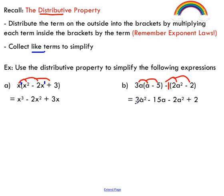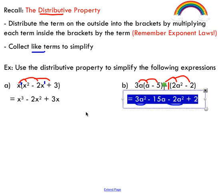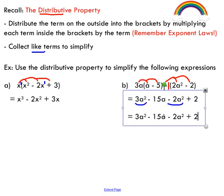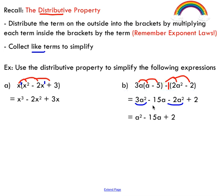Take a peek — I've got 3a² and negative 2a². I'm going to call those like terms because they have the same variable and the same exponent. So if I take 3a² and take away 2a², I've got 1a² left. That would be my simplified expression — I've collected my like terms, I've got no more like terms to collect, and this is the most simplified form of that expression.